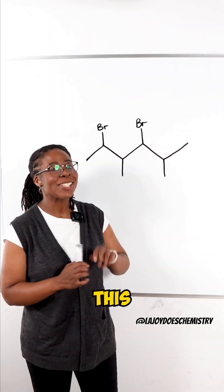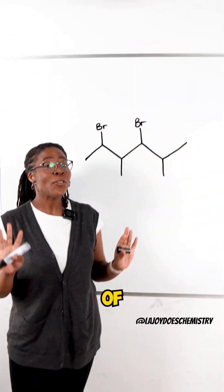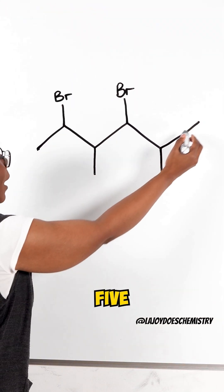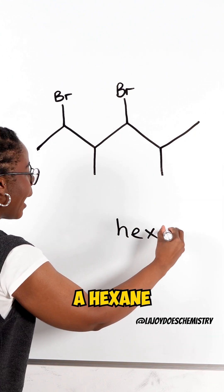Can you get the numbering right for this organic compound? So of course we'll start with the longest carbon chain which is one, two, three, four, five, six carbons making this a hexane.